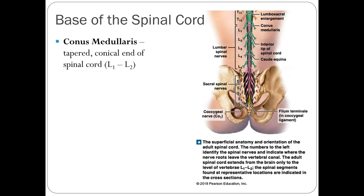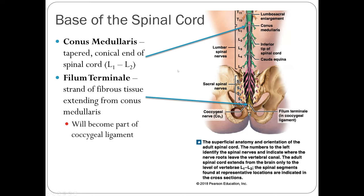At the base of the spinal cord, between L1 and L2, we have the tapered conical end called the conus medullaris. Another term to know is the filum terminale — a strand of fibrous tissue starting at the very tip of the conus medullaris. It runs all the way down and becomes part of the coccygeal ligament, which helps anchor the spinal cord within the spinal column.